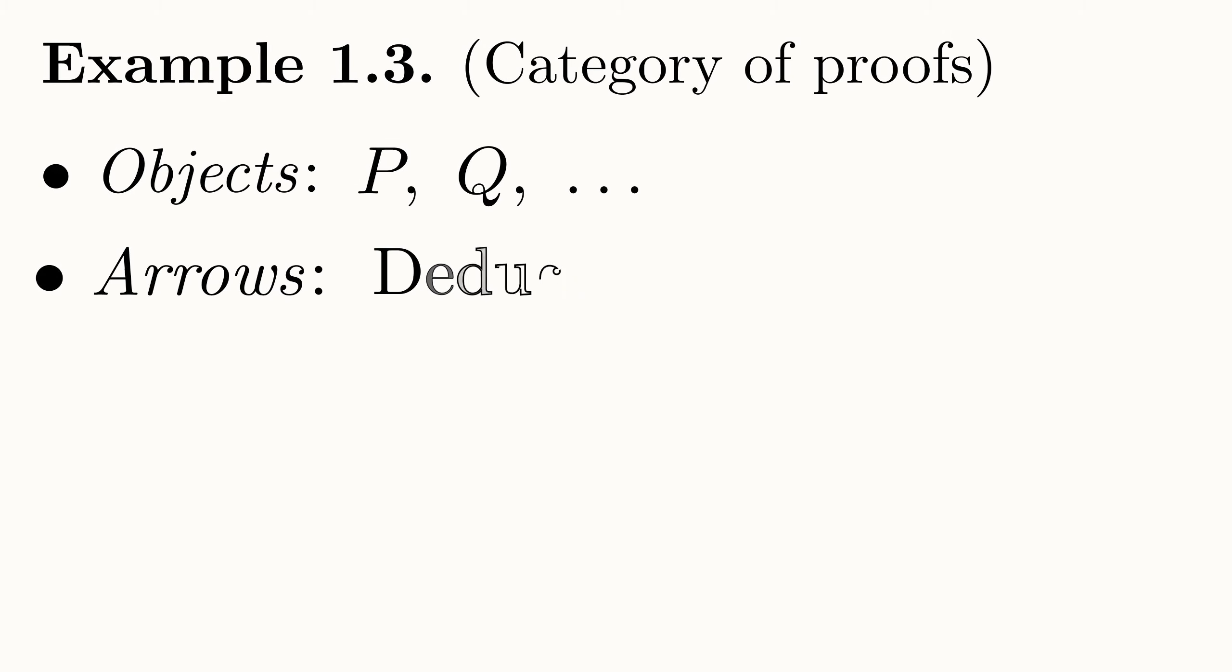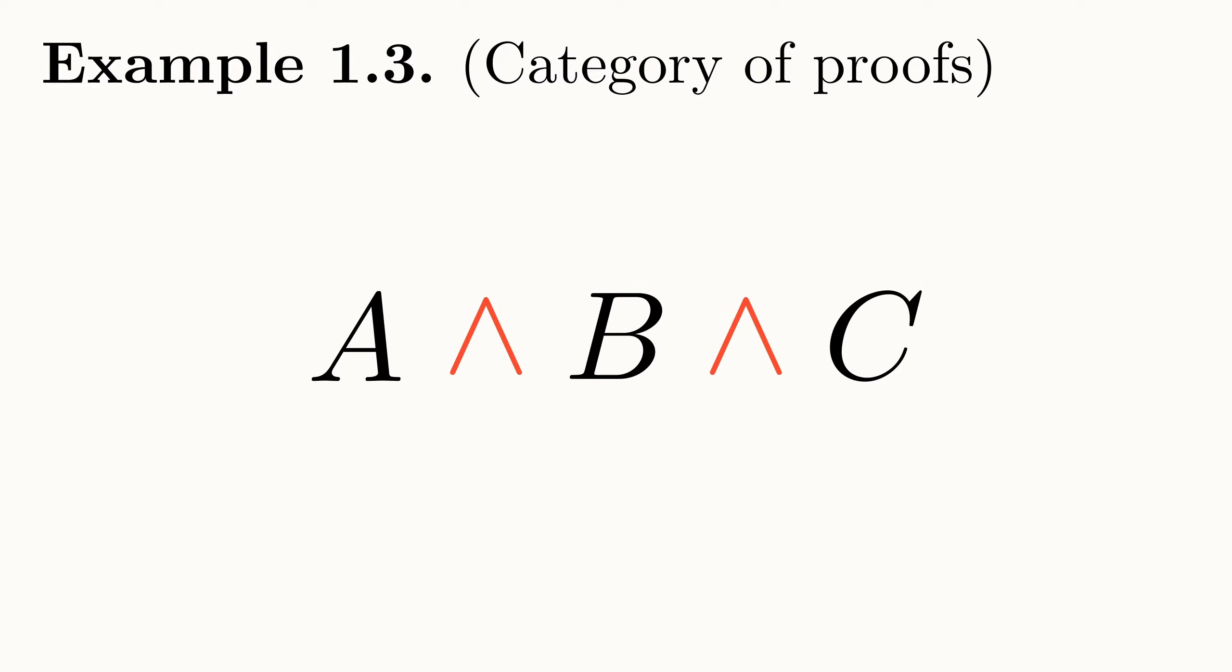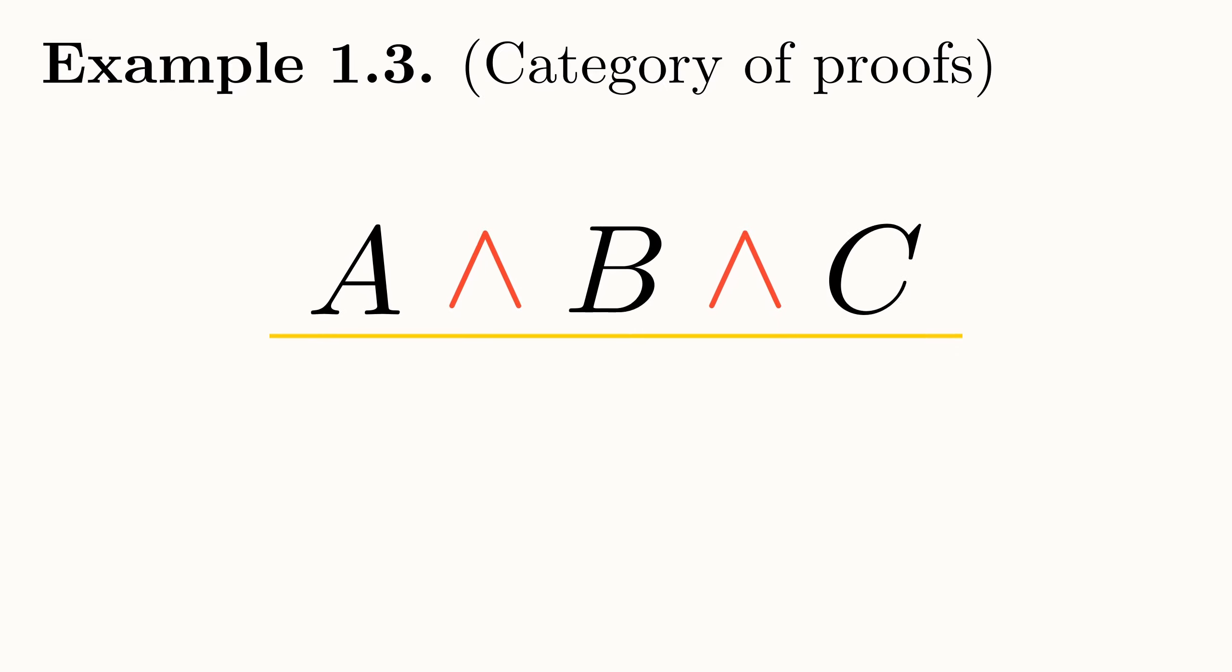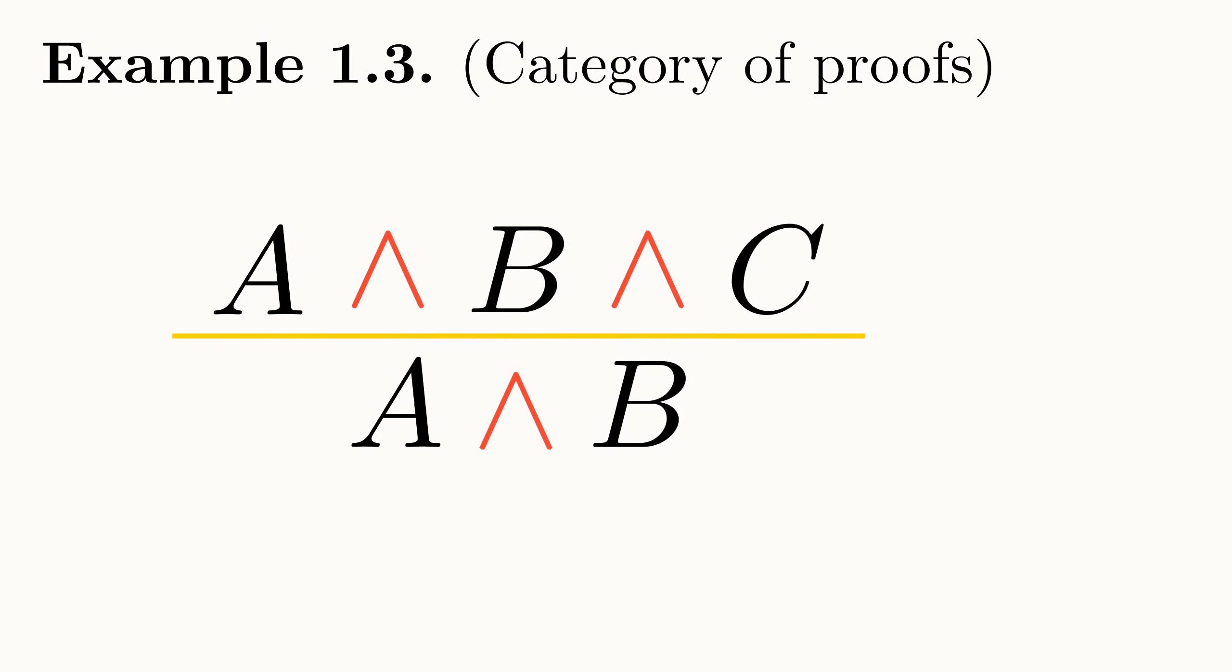Getting back to the matter at hand, deduction looks like a fantastic candidate for our arrows in the category of proofs as it goes from one object to another. We just need deduction to be composable and for there to be a unit of deduction for any proposition. As for composition, let us consider two deductions with a common middle proposition. Firstly, suppose the proposition A and B and C is true. In other words, each proposition A, B and C is true. Then we can prove that the proposition A and B is true as both A and B are true by assumption.